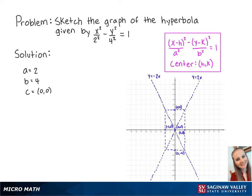Since x squared is positive in this problem, the hyperbola is going to open up to the left and to the right. And this completes the problem.